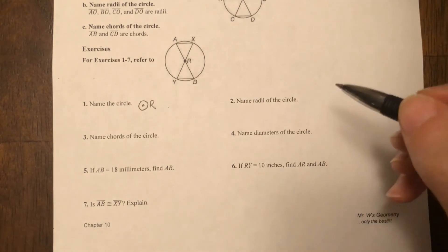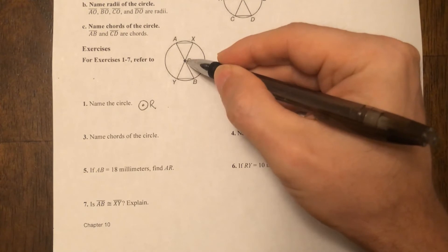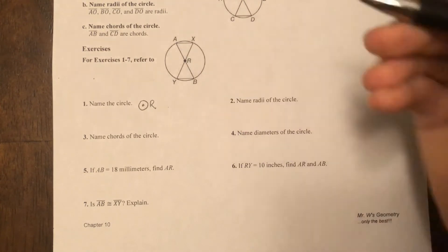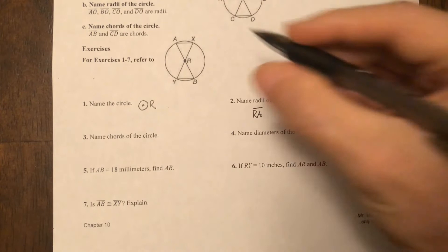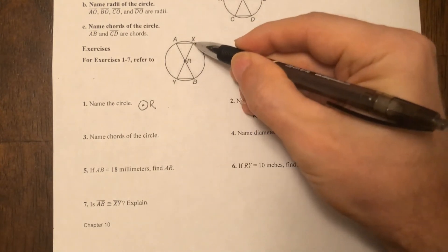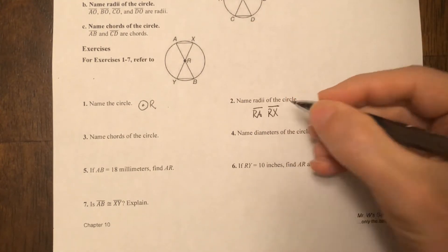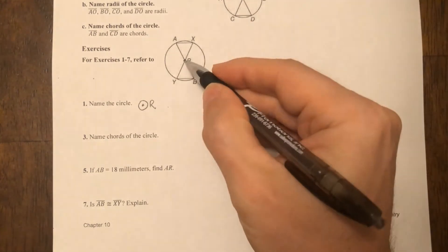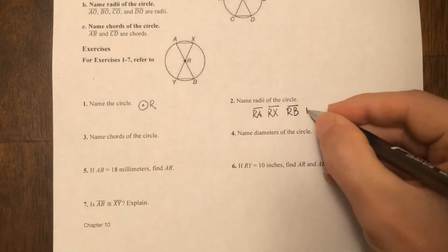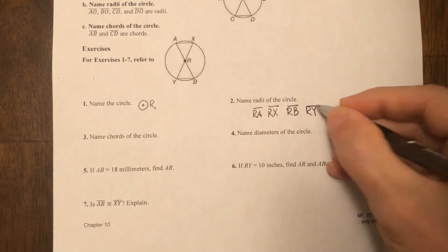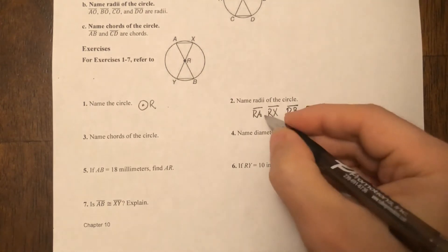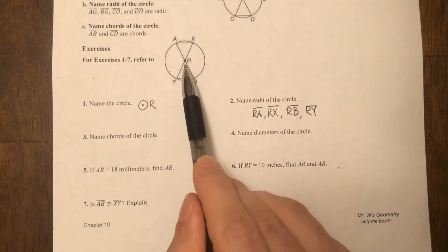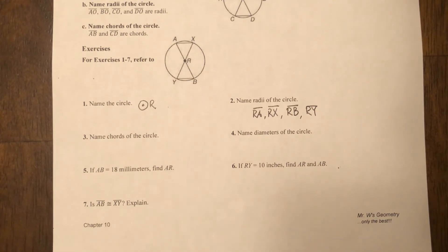So the radii are gonna be each one of these radius. I've got this one right here from R to A, this one from R to X, this one from R to B, and this one from R to Y. Don't forget your little segment lines right above each pair of letters. That way you're indicating their segments. That's it for all the radii, because again, from the center to the outside edge.